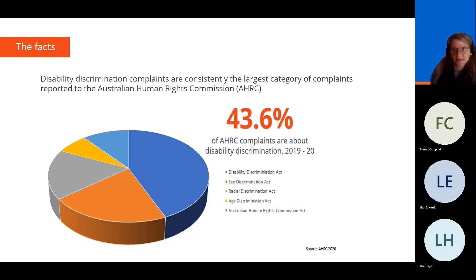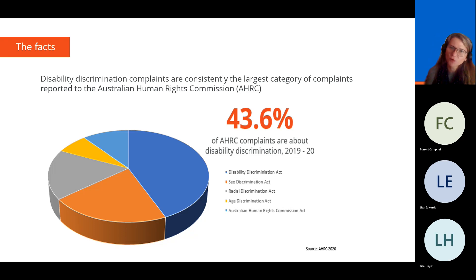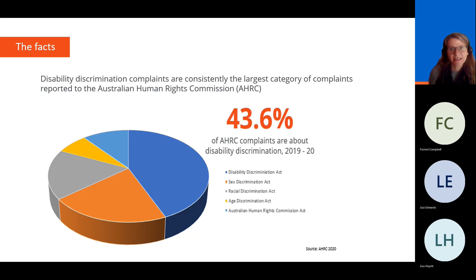Staying with the Human Rights Commission for a moment, let's look at some more statistics. Although they support people who are facing discrimination in all areas of life and work, they actually reported in a recent study that over 43% of all of their complaints are actually about disability discrimination — that's really a massive proportion. You can see on the chart here that the next biggest area for discrimination is gender followed by racial discrimination.